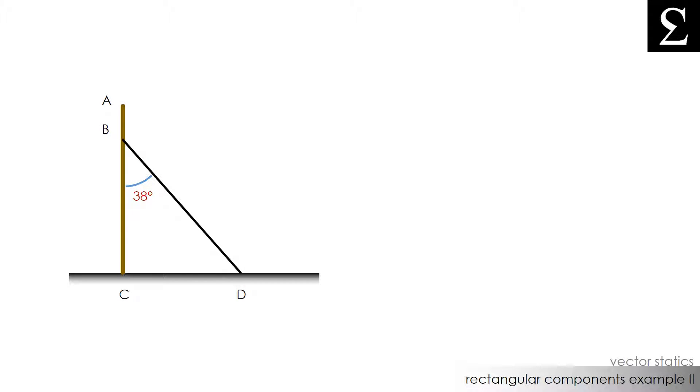In this example, we have a post AC that is sticking out of the ground. Attached to it is a wire BD that keeps the pole from falling over. The angle that the wire makes with the pole is 38 degrees.